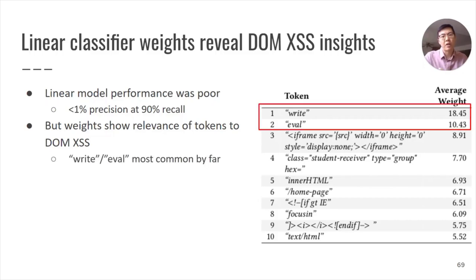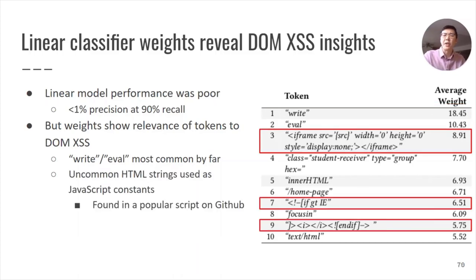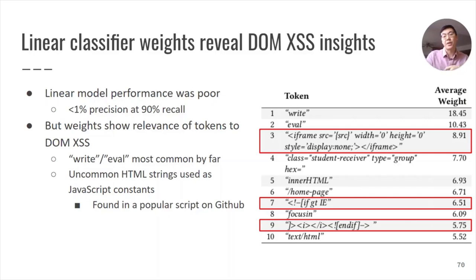There are two findings we'd like to share. Firstly, write and eval were the most common tokens seen by far — this is unsurprising as they directly relate to sensitive DOM writing sink functions. Secondly, we saw that some long, uncommon HTML strings being used as JavaScript constants were also in our top 10 most important tokens. This is a bit surprising, but after searching for these tokens on GitHub, we found that they occurred in popular scripts that were frequently copied and forked into other repositories. This suggests yet another reason why DOMXSS is becoming more prevalent: developers may be importing scripts in libraries without fully understanding the security implications of doing so.